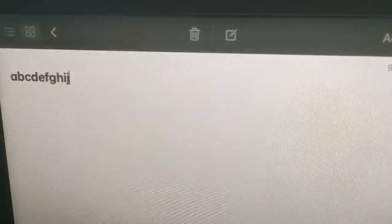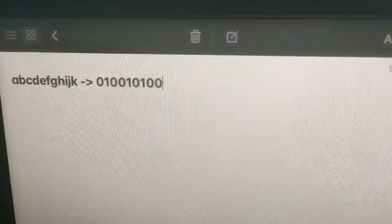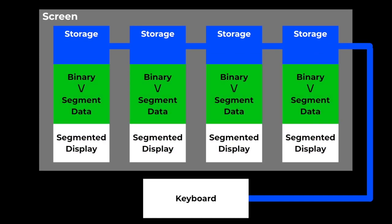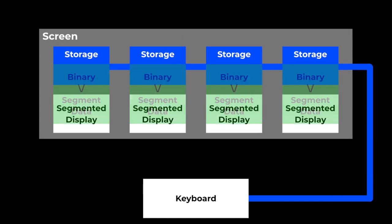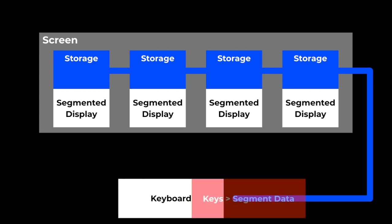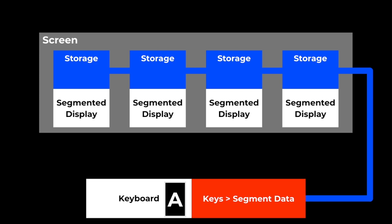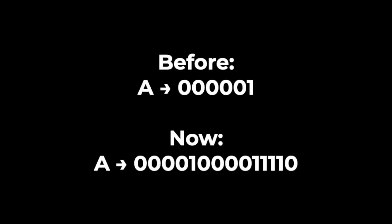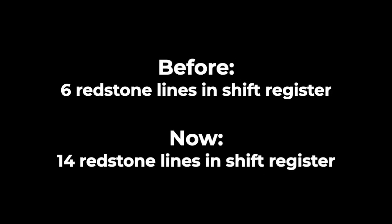In real computers, this would use an encoding standard, for example ASCII or Unicode, which assigns each letter with a unique binary code. However, if I were to use this in my machine, then reading the binary code and determining which segments are supposed to be on would be very bulky, since the parts for this process would be required in every single module of the segment display. So, instead of having a decoder and encoder for each module, I decided that it would be better if there was only one of these for the entire machine, located at the keyboard. The letters would already be translated into the segment data before being stored in the shift register. Of course, using this way, there would be more data to store per character, which means more redstone lines in the shift register, but I thought this compromise would be just fine.